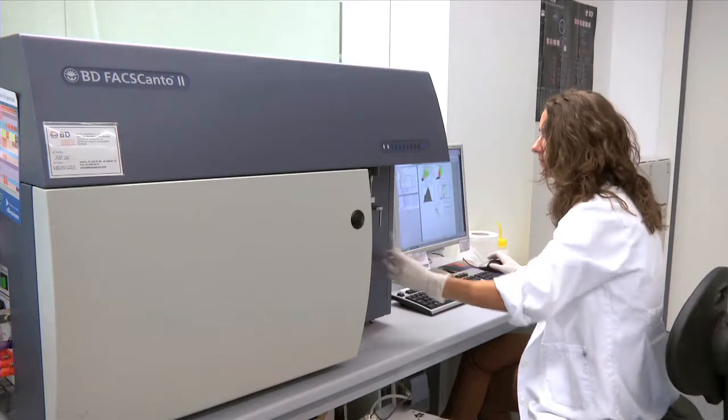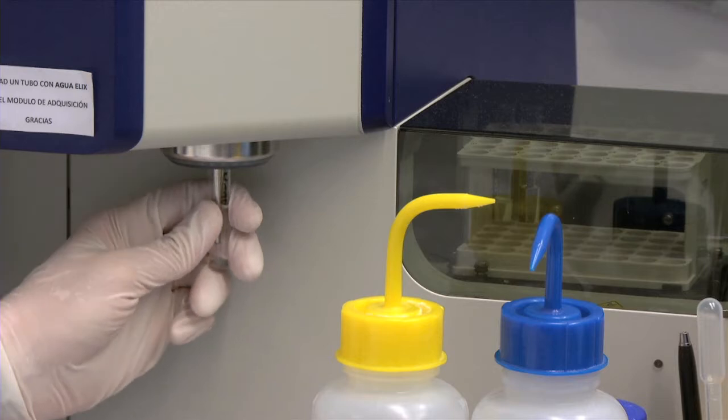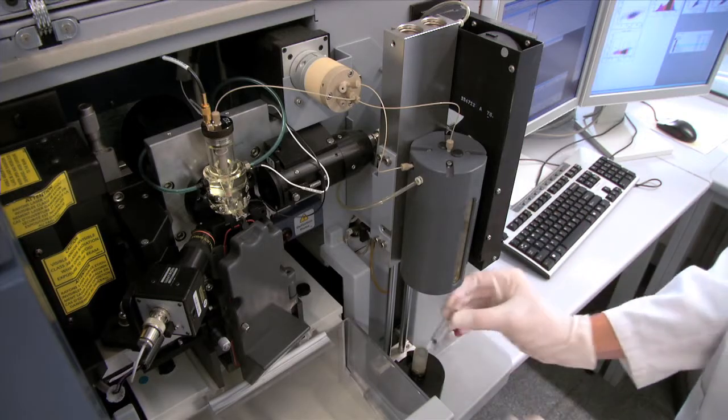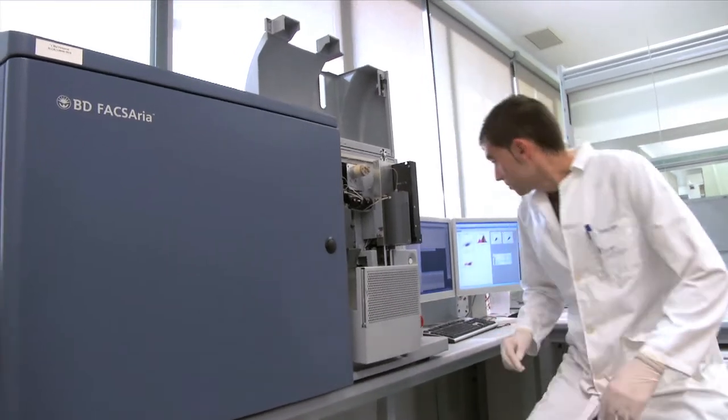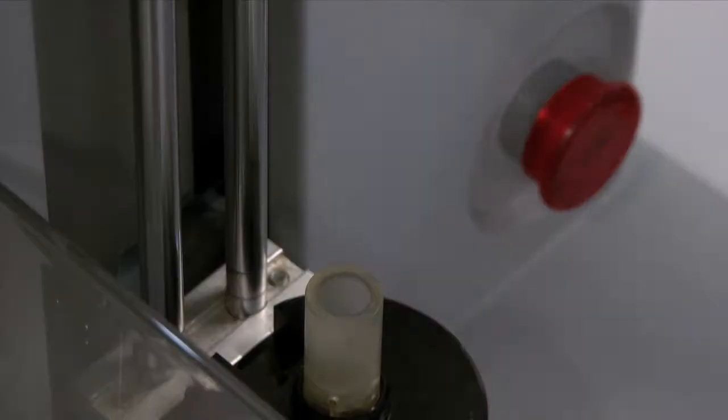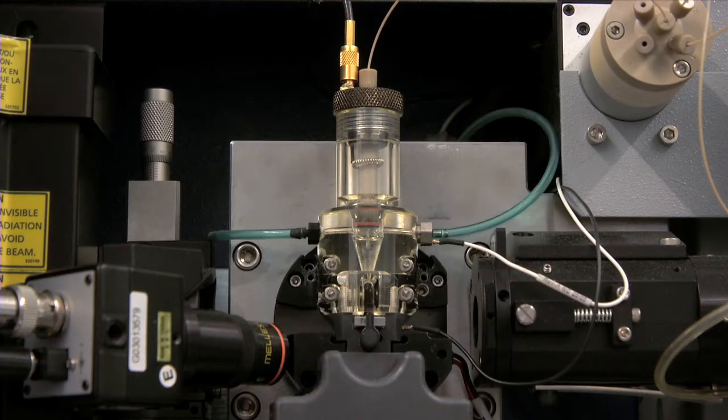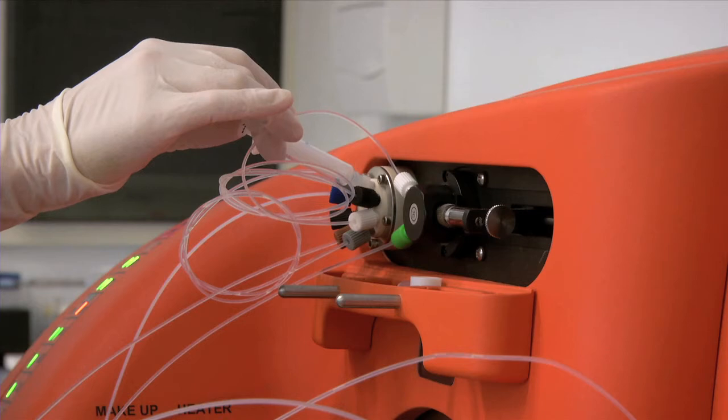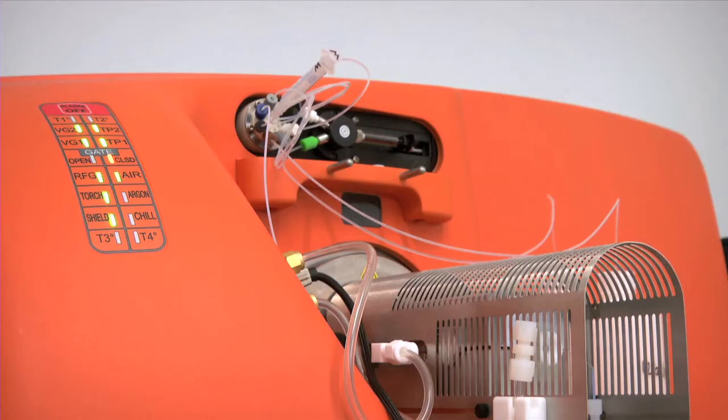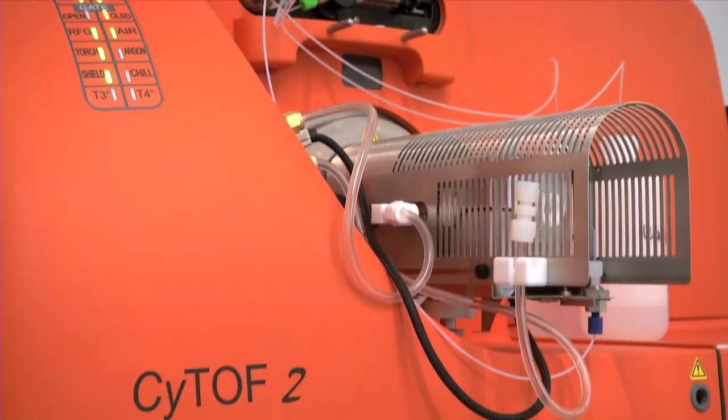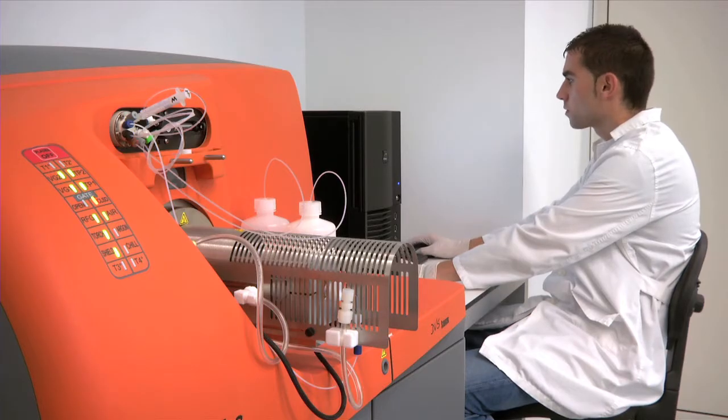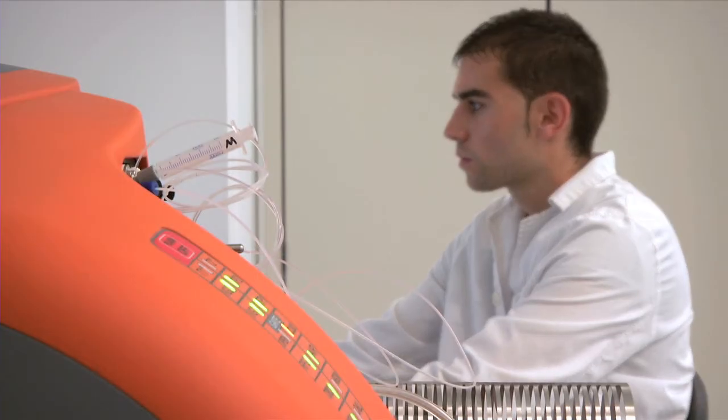In the cytometry and sorter unit, we have three flow cytometers: FACS Canto II, FACS Verse and FACS Aria, the latter with the possibility of separating populations. The unit also has a CyTOF2 mass cytometer, the only cytometer with atomic mass spectrometry, that allows the multiparametric analysis of more than 30 biomarkers at an individual level.